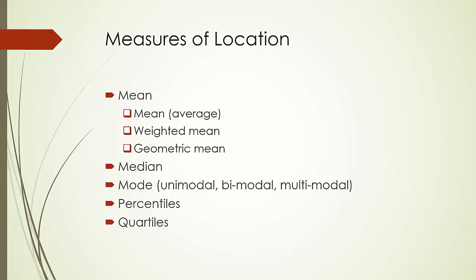First, all numbers are ranked in ascending order from the smallest to the largest. Then the location of the pth percentile is given by p times (n+1) divided by 100. Suppose we want to compute the 30th percentile of our list of four numbers 10 through 40. Here n is equal to 4, so the location of the 30th percentile is 30 times 5 divided by 100, which is equal to 1.5. The 30th percentile will then be equal to 10 plus 0.5 times (20 minus 10), which is 15.